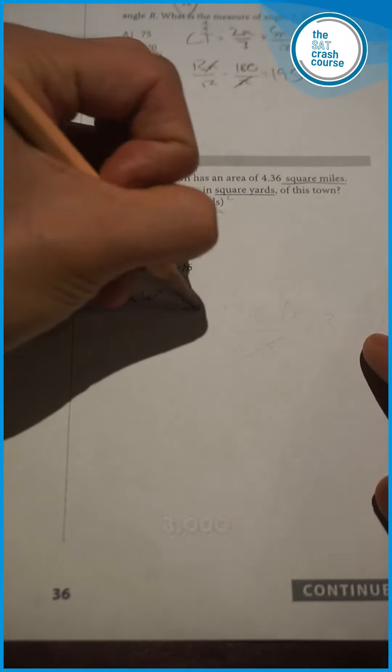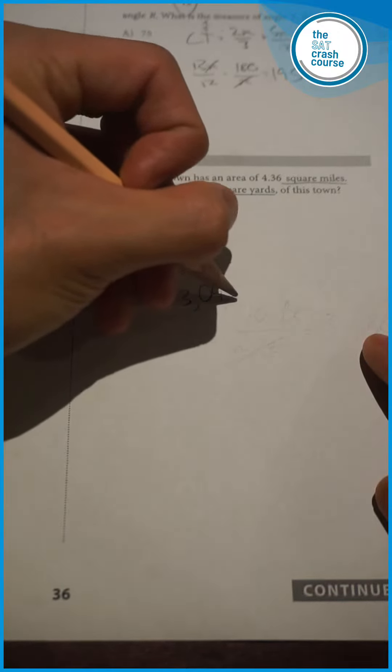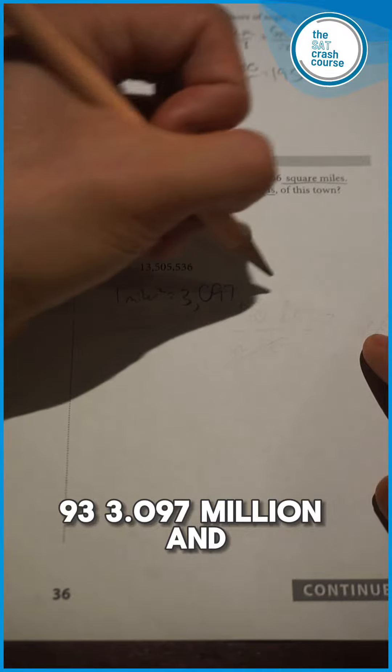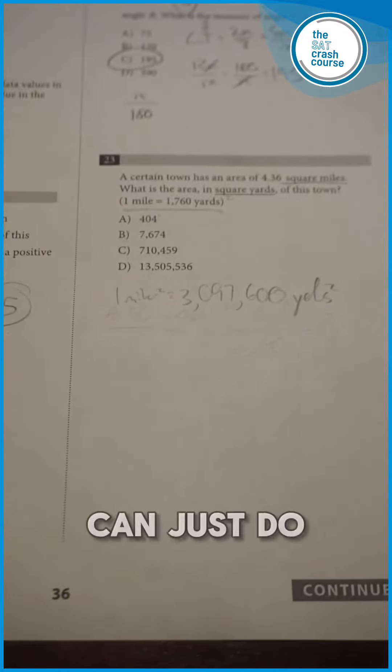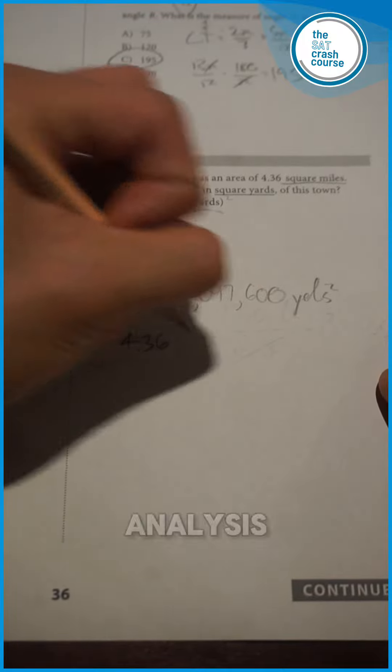...and you're given your calculator, so 3,097,600 yards squared. Now then we can just do our conventional unit analysis.